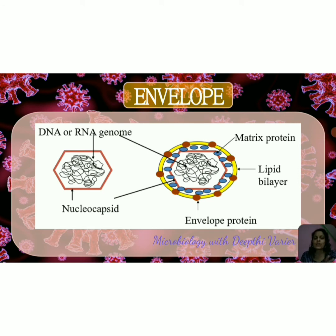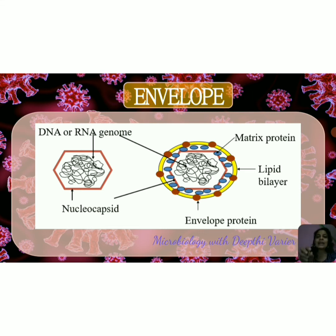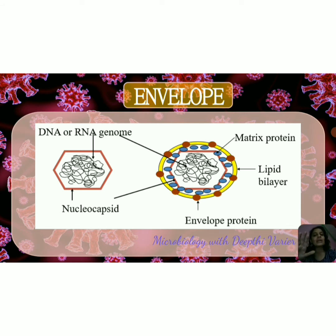All viruses have a nucleocapsid structure — the genome along with the capsid. The last layer is the envelope, which is optional and not present in all viruses. If present, it is made up of lipids — specifically a lipid bilayer derived from the host plasma membrane, or in some cases from the host nuclear membrane. Because it is primarily derived from the host, it is made up of a lipid bilayer. Inserted into this lipid bilayer are certain glycoprotein spikes, which are called peplomers.